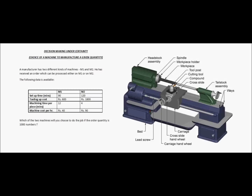Let us look at an example of decision making under certainty. A manufacturer has two different kinds of machines, M1 and M2. He has received an order which can be processed either on M1 or on M2. We have collected information about the processing times on these machines.